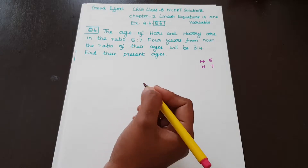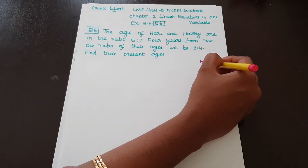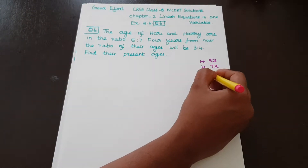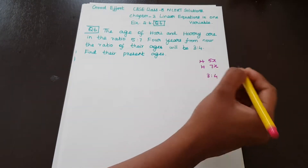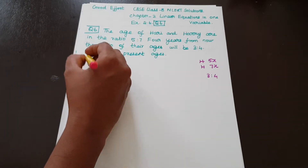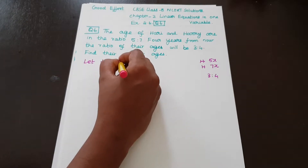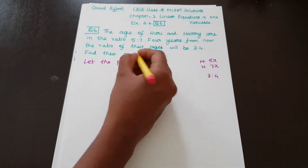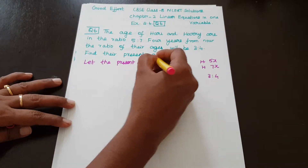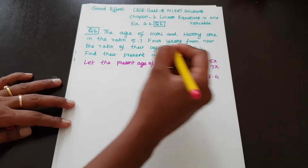The present ages are in the ratio 5 is to 7. So let the present age of Hari be equal to 5x and the present age of Harry be equal to 7x.